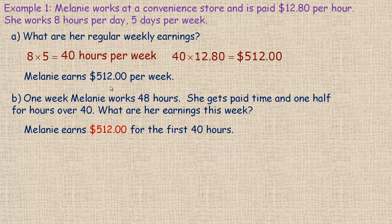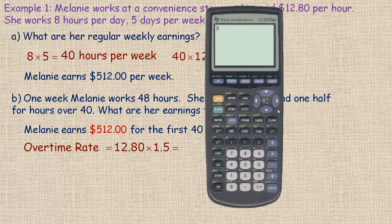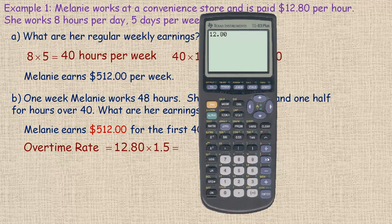In part (b), this week Melanie works 48 hours. She gets paid time and a half for hours over 40. She already earns $512 for the first 40 hours. We need to figure out how much she gets for the last eight hours, from 40 to 48. We calculate the overtime rate by taking $12.80 and multiplying by 1.5.